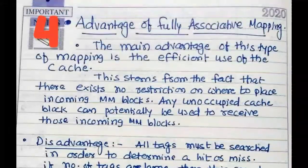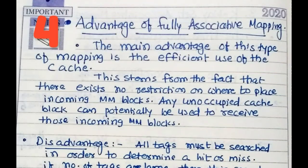Now the advantages. The main advantage of this type of mapping is efficient use of the cache. This stems from the fact that there exist no restrictions on where to place incoming main memory blocks. Any unoccupied cache block can potentially be used to receive those incoming main memory blocks.